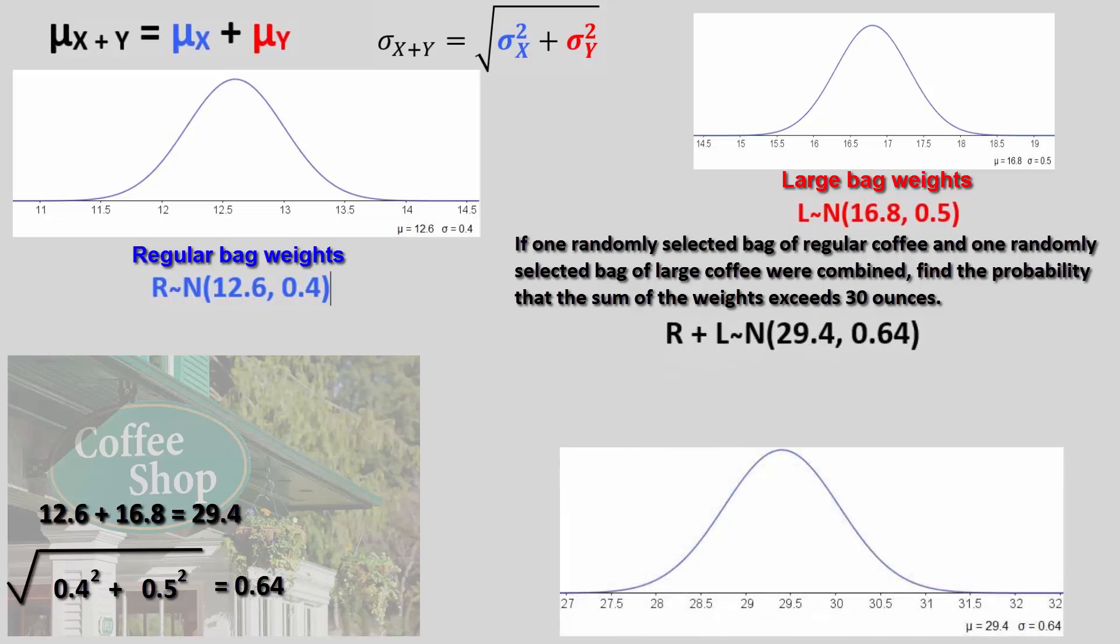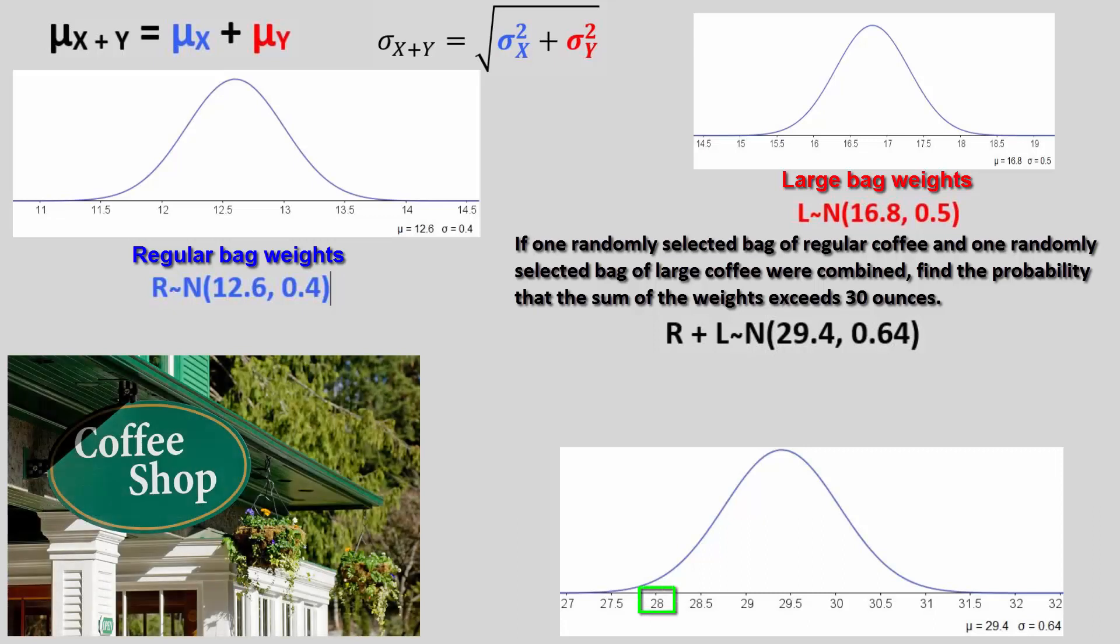Make sure you conceptualize this joint distribution. Every score on the x-axis is the sum of weights of one regular bag and one large bag. For example, the 28.0 implies the sum of the two bags is 28 ounces.